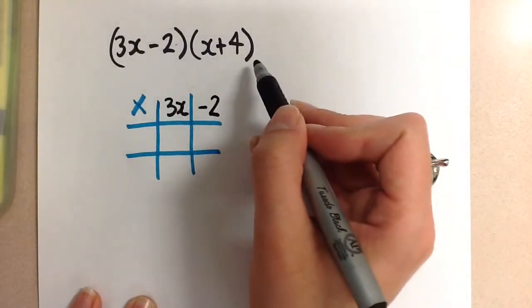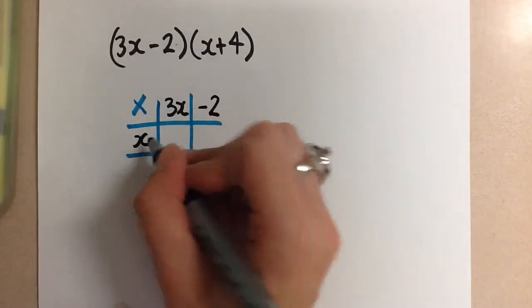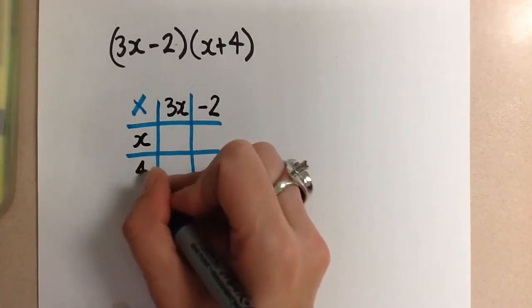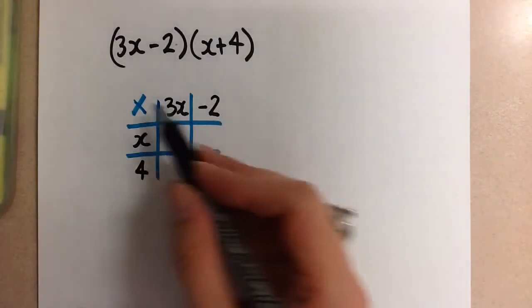Now look at the second binomial that we have. We have an x term, which we'll put here. And then we have a positive 4. So that one's positive. So we leave it like that. Okay, so now we've filled in the outside of the multiplication chart.